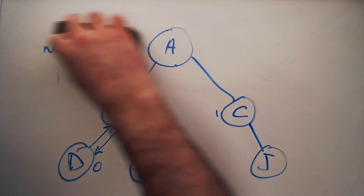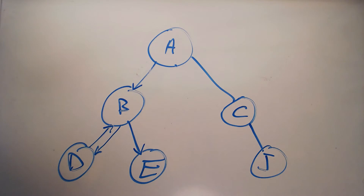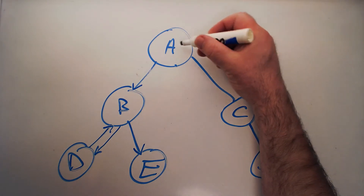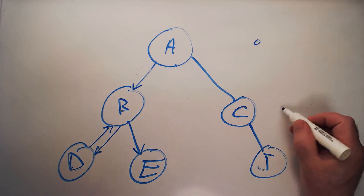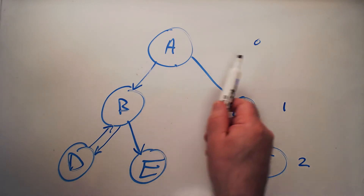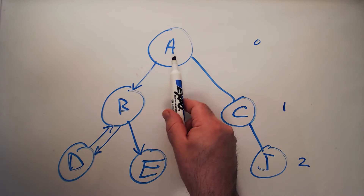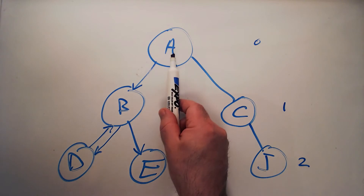Let's talk about what we mean by the depth or level of a tree. By definition, the depth of the root is zero — it's on level zero. So C is depth one, J is depth two, and so on. More formally, the one and only root node has a depth of zero, and any other node has a depth equal to the depth of its parent plus one.